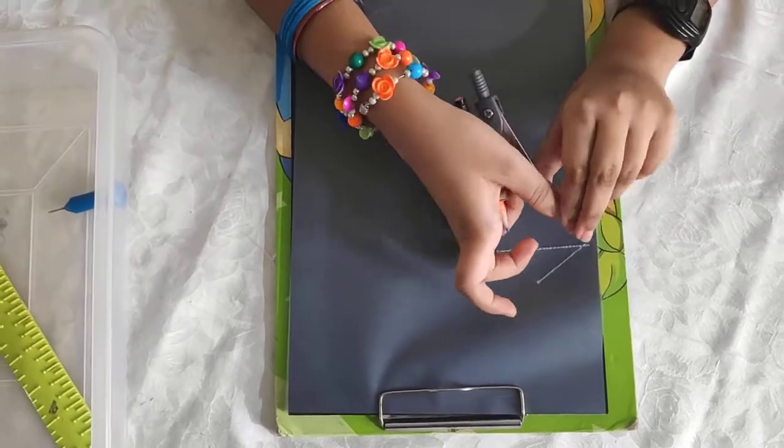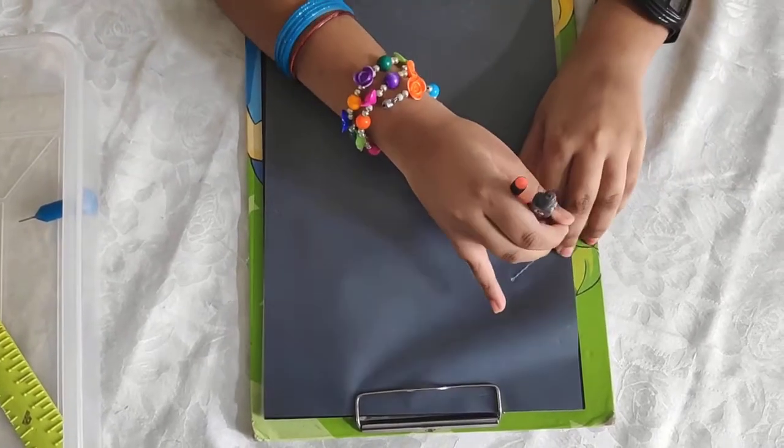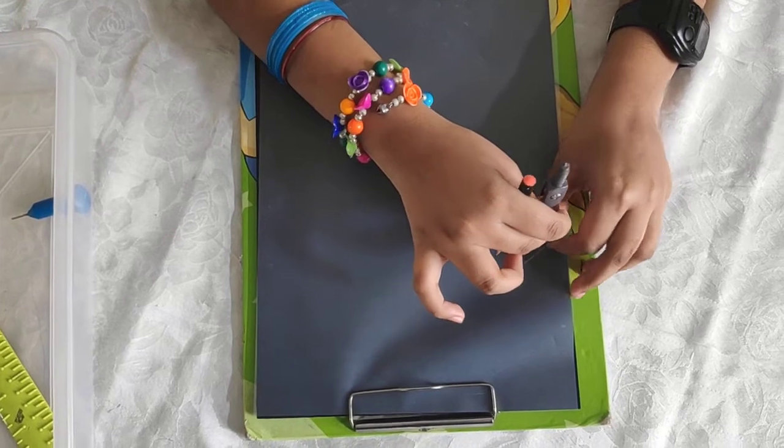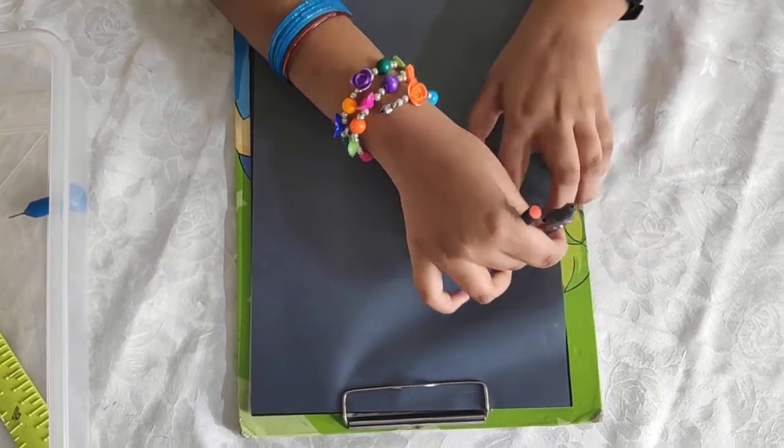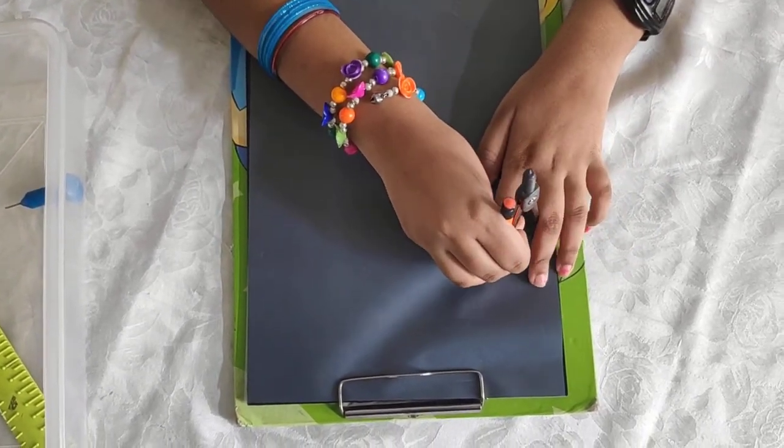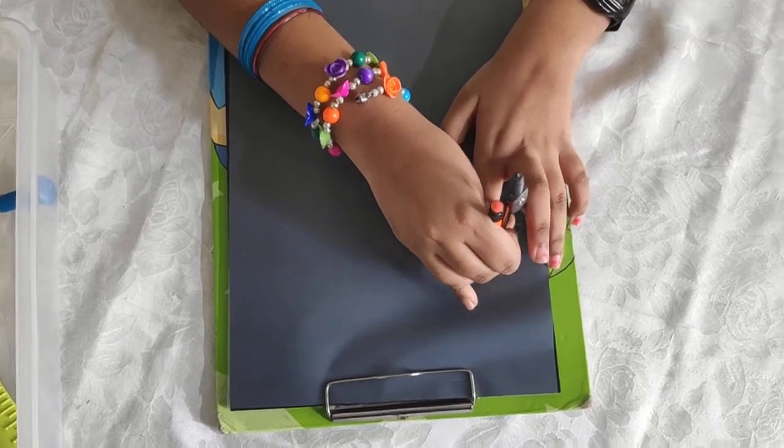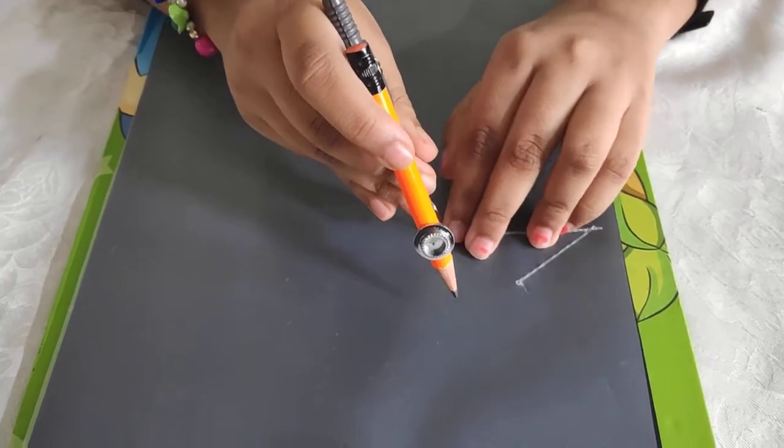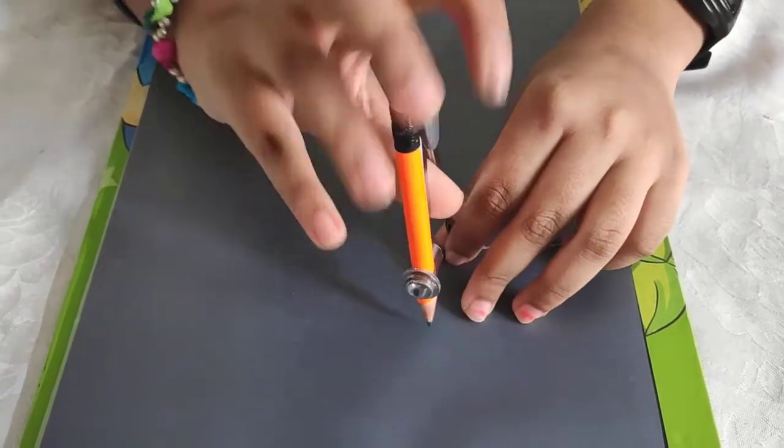Now I'm going to take my compass, place the compass needle at B, stretch it all the way to C, then bring my compass needle to A and draw an arc.